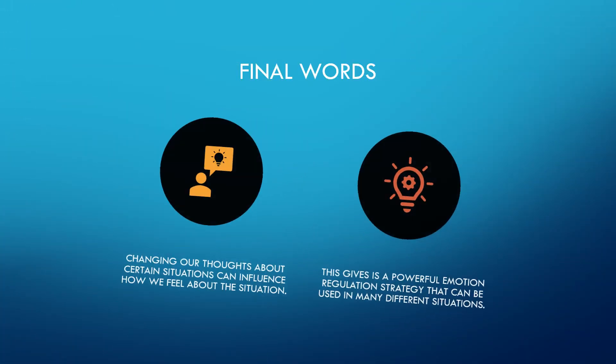In conclusion, our emotions can be regulated by changing our thoughts about certain situations. If we reinterpret events in a more positive way, we can experience more positive and desirable emotions about the events.